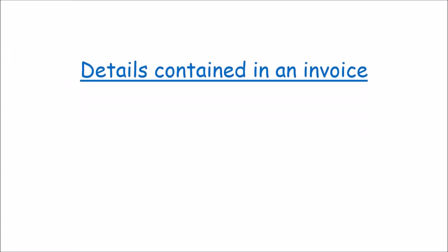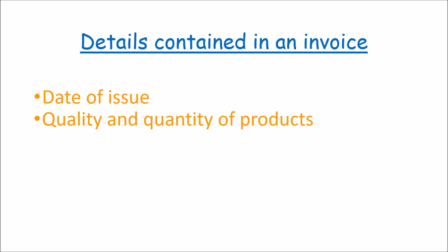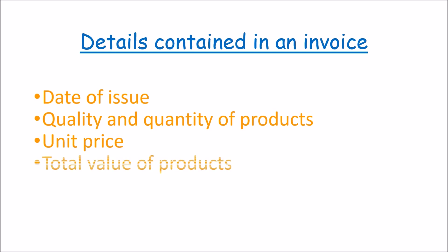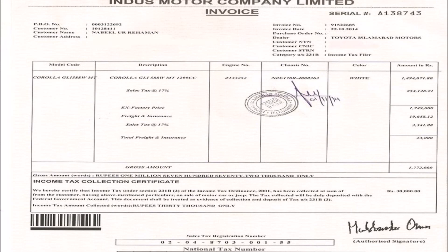This invoice will contain details like the date of issue, quality and quantity of cars supplied, unit price, and value of the cars. It also includes the terms of credit, the discounts, and the amounts to be paid. Because this invoice is being issued from my business to my customer, it is therefore called an outgoing invoice.